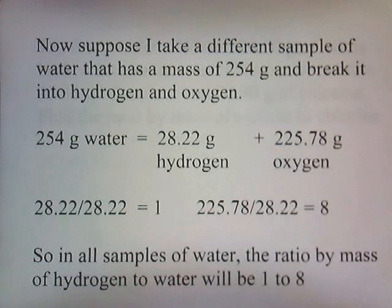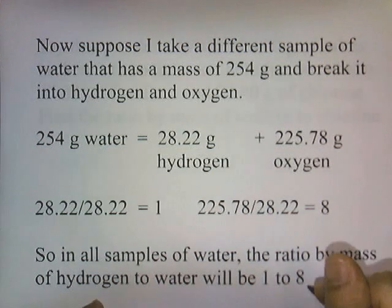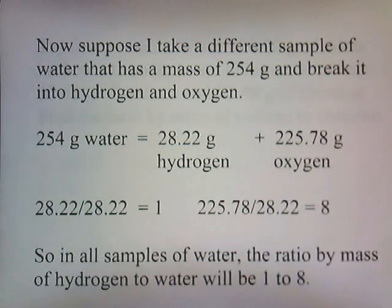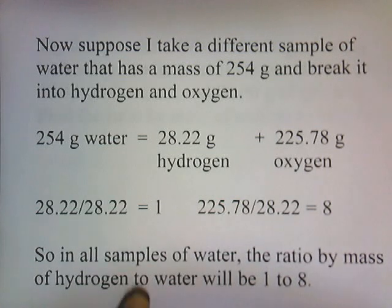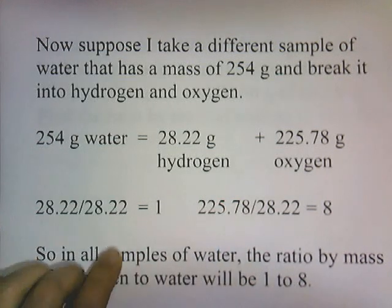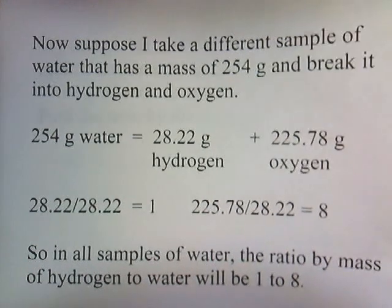In all samples of water, the ratio by mass of hydrogen to oxygen is going to be 1 to 8. That's the Law of Definite Proportions — you're always going to get the same proportions no matter what sample size you have. The ratios are going to be the same.